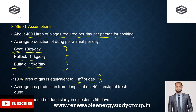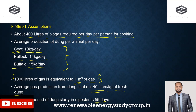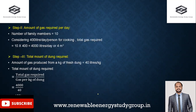Average gas production from dung is about 40 liters per kg of fresh dung — meaning 1 kg of cattle dung fed into the slurry produces 40 liters of biogas. The retention period of the dung slurry in the digester is 55 days. This period depends on temperature — higher temperatures enhance biogas production and reduce retention time. On average, 55 days is used for our calculation.